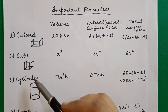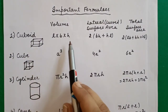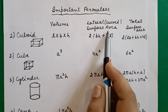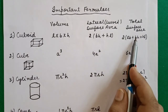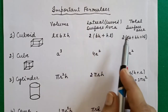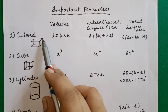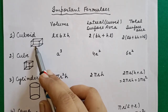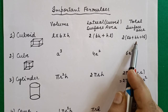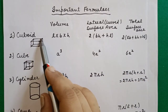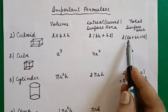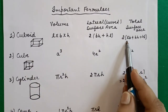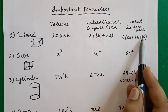For cuboid, cube, cylinder, cone — the lateral or curved surface area formula is derived from the total surface area. You only need to remember volume and total surface area; for lateral surface area, take the total surface area and subtract the top and bottom areas. For a cuboid, subtract 2l×b from the total surface area formula, giving you 2bh + 2hl.